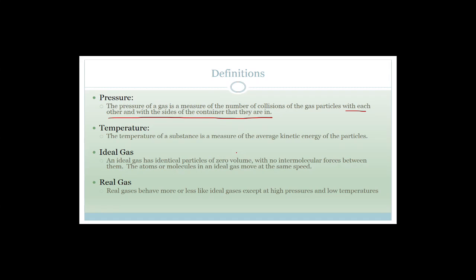An ideal gas has identical particles with zero volume. There are no intermolecular forces between them, and the atoms and molecules move at exactly the same speed. A real gas behaves more or less like ideal gases, except at high pressures and low temperatures. Grade 11s, they love asking: when do real gases not behave like ideal gases? And you have to say at high pressure and low temperature. Don't say high temperature and low pressure — it has to be high pressures and low temperatures.